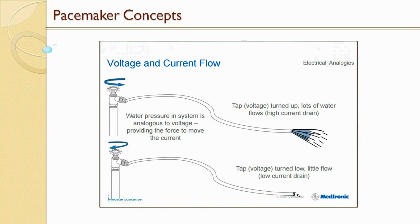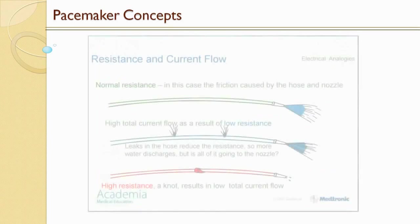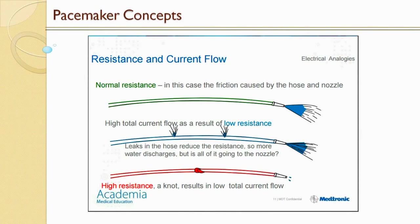The water tank represents the battery capacity. As you open up the tap, the water flows out, draining the tank — very similar to when we turn the voltage up on a pacemaker, allowing current to flow and eventually draining the battery. Resistance in this case is the friction caused by the hose and the nozzle at the end. The larger the diameter of the hose, the less resistance. More water flows out of a fire hose compared to a little garden hose. This hose with normal resistance is analogous to a normal functioning pacemaker lead.